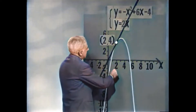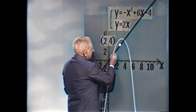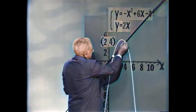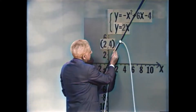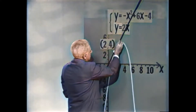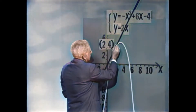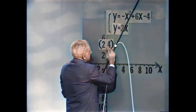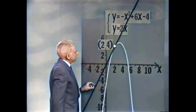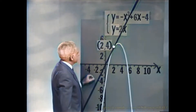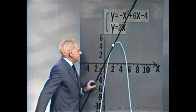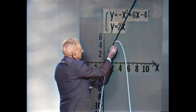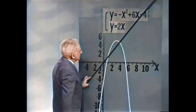כאשר הישר הסתובב והשיפוע שלו גדל עד 2, התקרבו הנקודות זו לזו, עד שהתלכדו בנקודה אחת — הנקודה 2, 4. אבל במקרה הזה, אנחנו סובבנו את הישר בזווית קטנה.